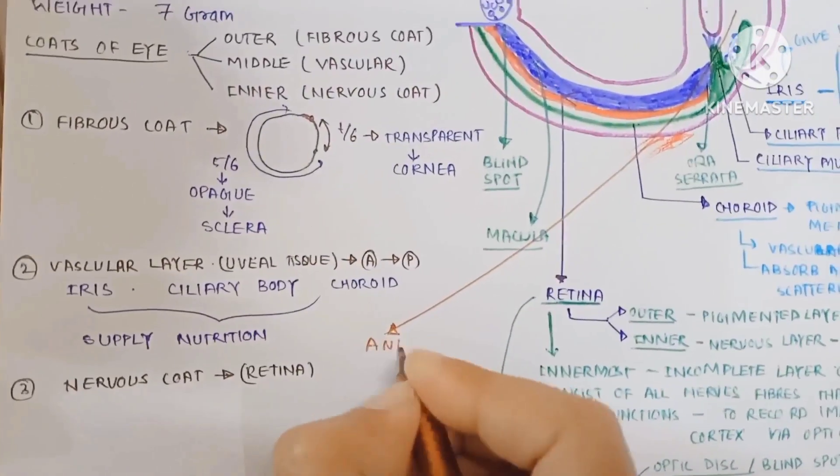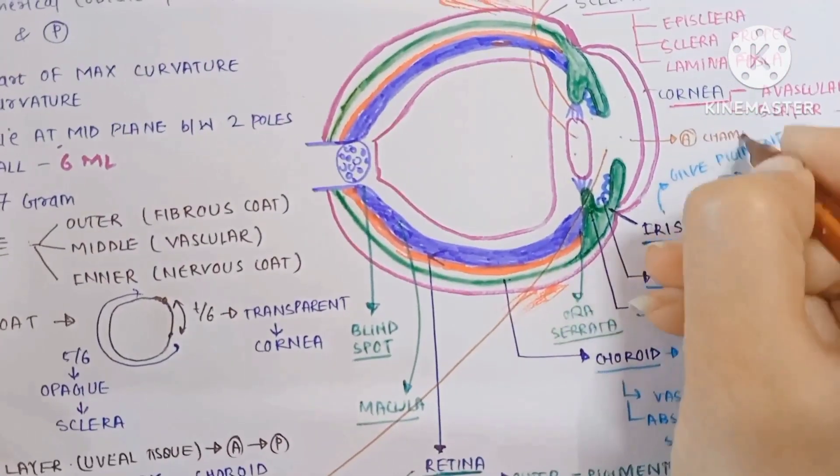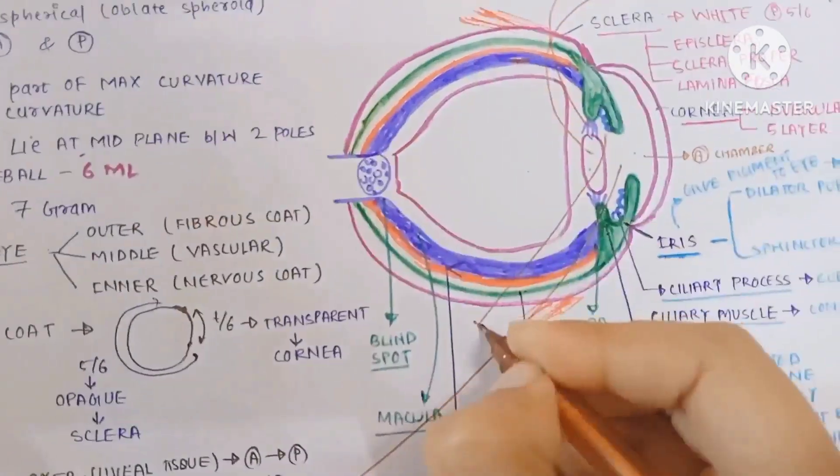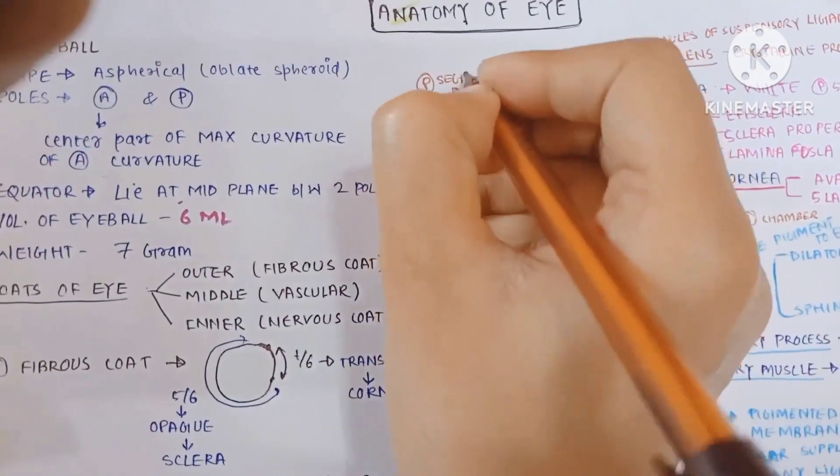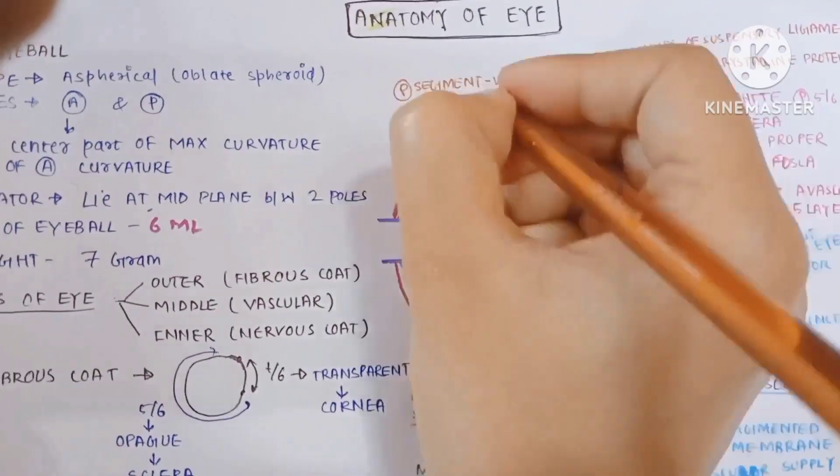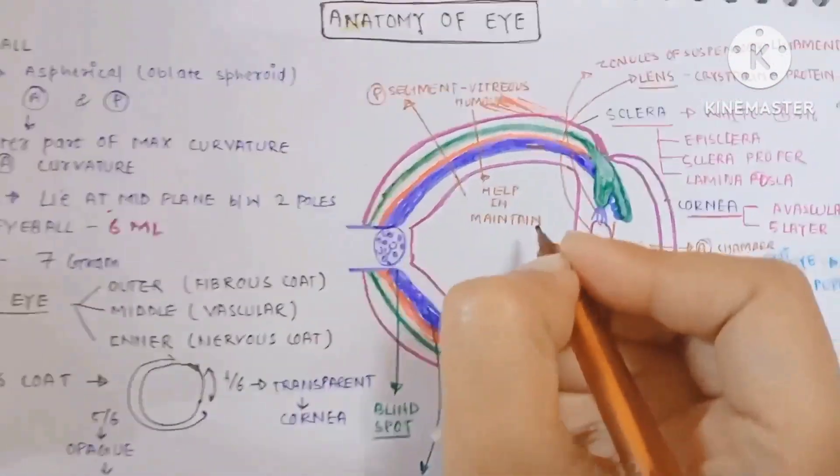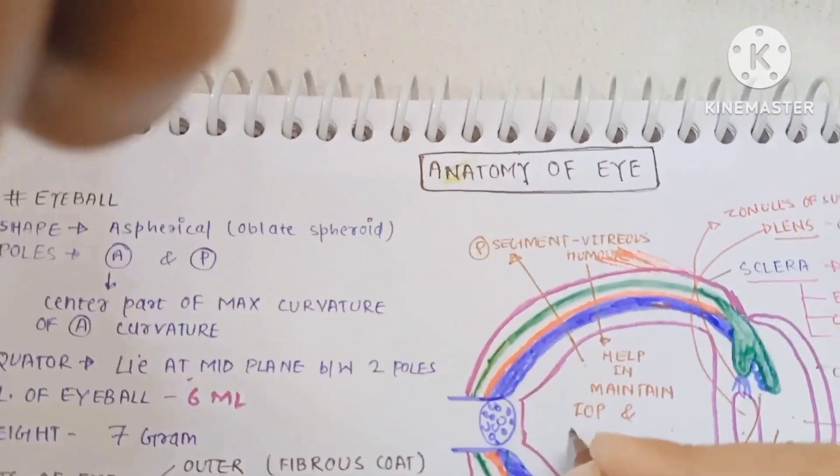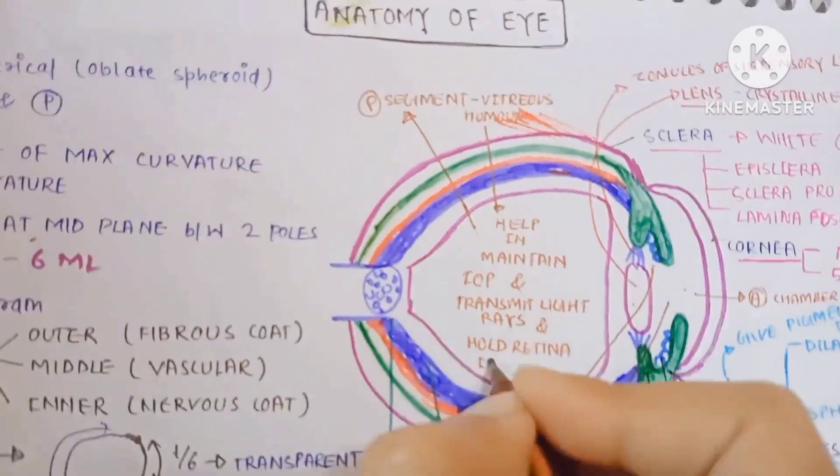The eyeball has two segments. The anterior segment is filled with aqueous humor and has two chambers: anterior chamber and posterior chamber. The posterior segment is filled with vitreous humor. The vitreous humor helps maintain intraocular pressure, transmits light rays, and holds the retina in place.